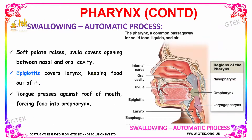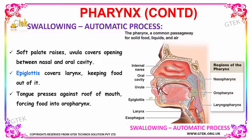Let us see how the swallowing process takes place. The soft palate — that is the roof of the mouth — will rise, and the uvula covers the opening between the nasal and oral cavity. Your epiglottis will cover the larynx, preventing the entry of food into the larynx — that is your windpipe. Your pharynx has the nasopharynx, the oropharynx, and the laryngopharynx.